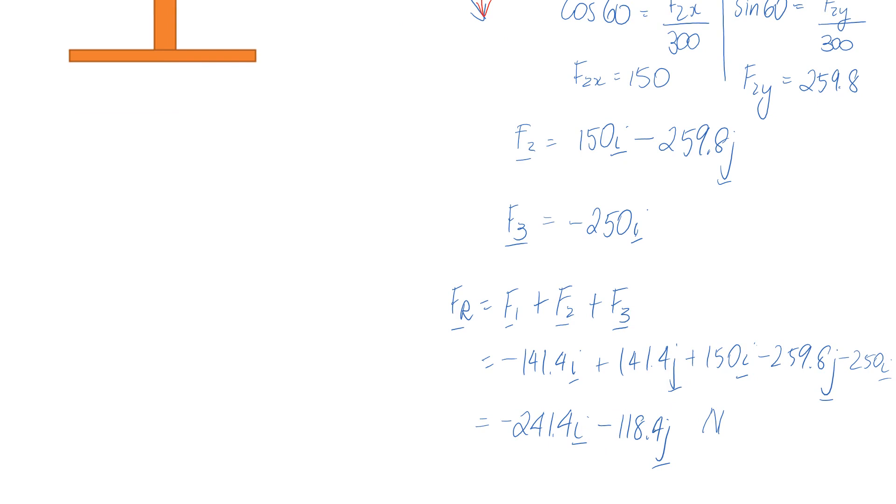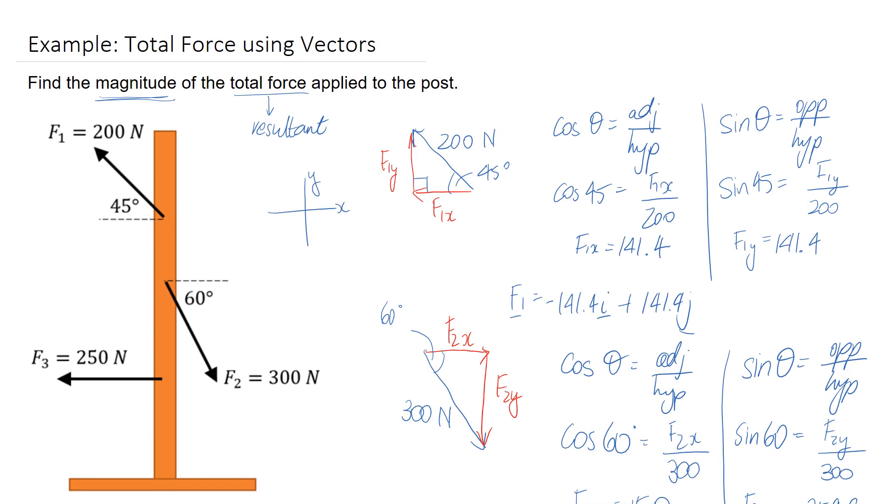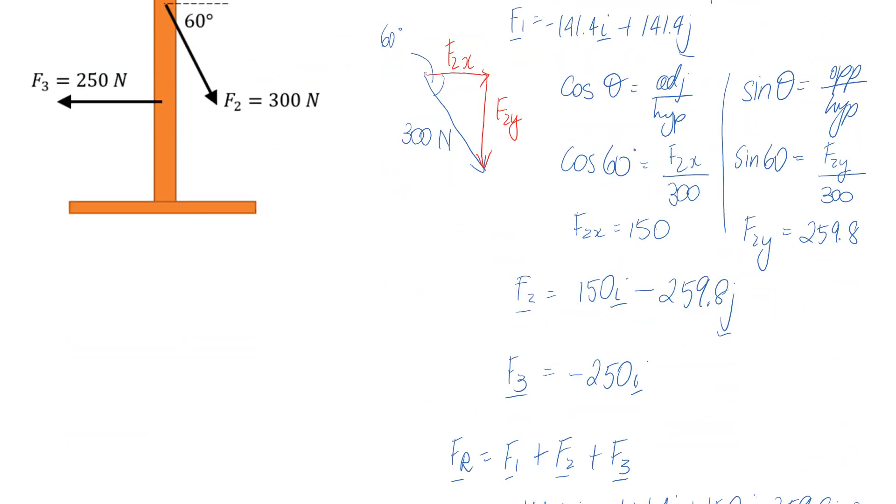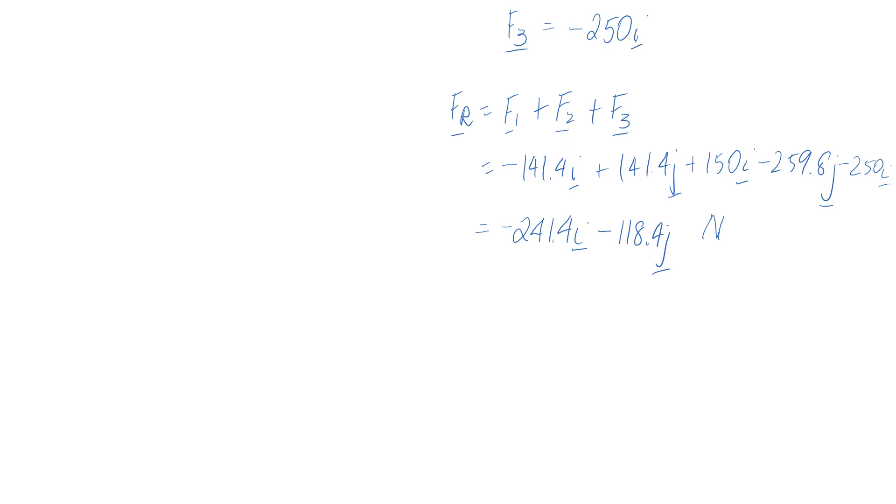Now we weren't actually asked for the vector form. What we were asked for specifically was the magnitude of this vector. So we just need to go ahead and convert it over. Sometimes it helps to draw the little triangle. So I'm going to pop in here. This is my negative x component, so it's got a length of 241.4. And then I've got a negative y component, so it's going to go down 118.4.